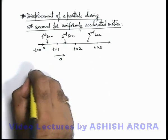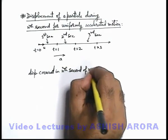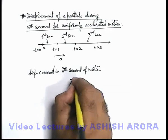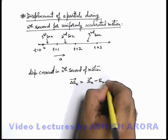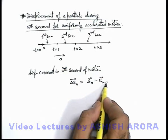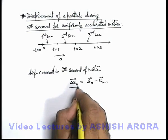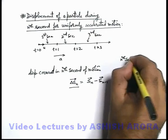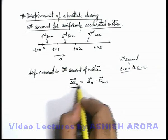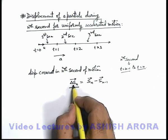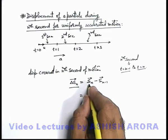If we find the displacement covered in the nth second of motion, it can be written as the displacement covered up to the nth second minus the displacement covered up to the (n−1)th second. The nth second spans from t = n−1 to t = n. This displacement can be calculated using speed equation number 2 — ut + ½at² — by taking the difference of displacements at t = n and t = n−1.